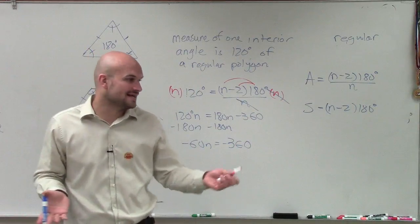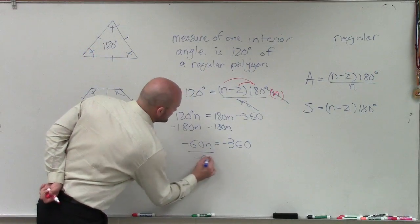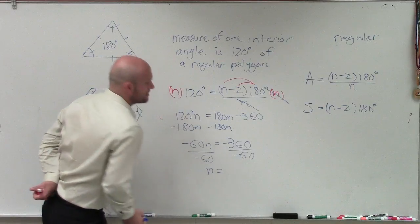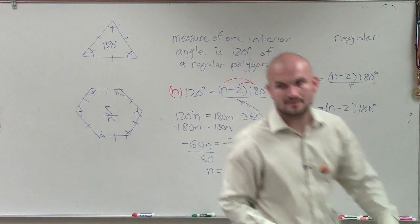And now, just to solve for n, Colin, what would I do to solve for n? Divide by negative 60. So n equals how many sides? Six. Very good.